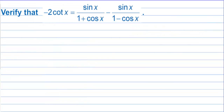Verify that negative two cotangent of x is equal to the right side. I think clearly the right side is the more complicated side. So let's use the right side and try to turn it into the left side. We're going to do that by using a common denominator.